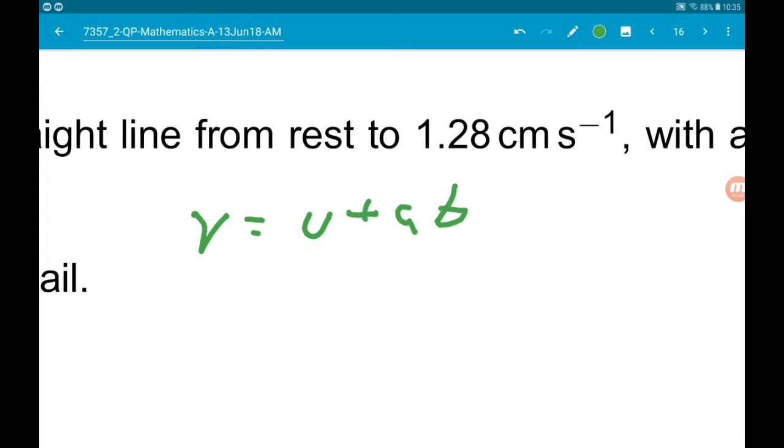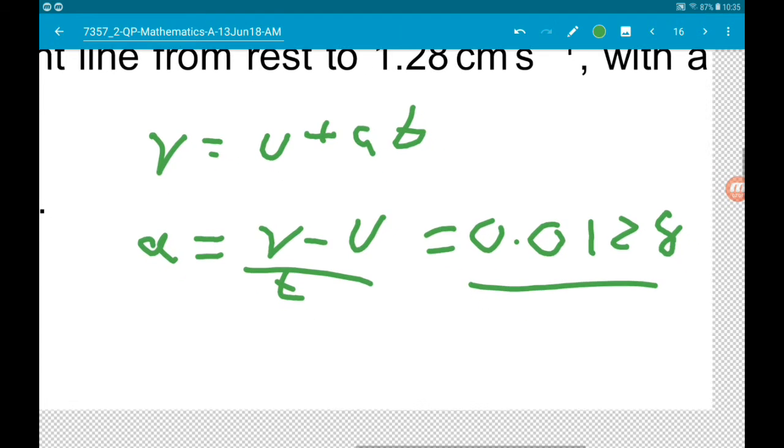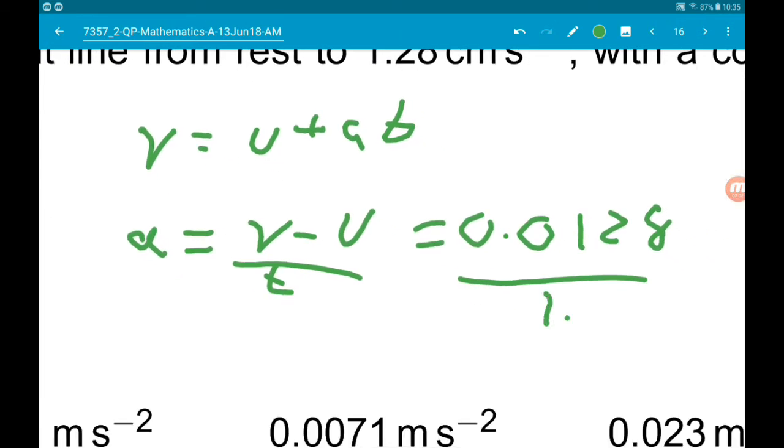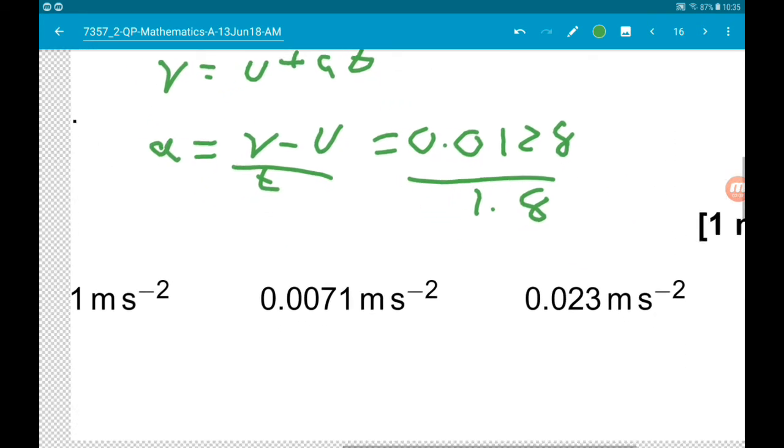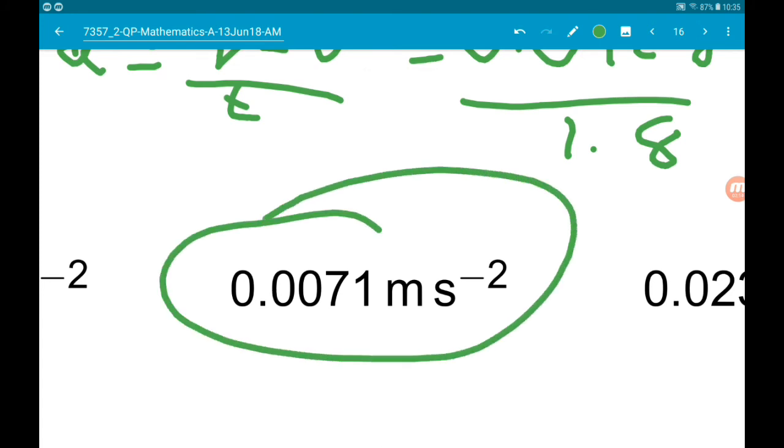So here that's gonna be 0.0128 over 1.8. Now that gives us 0.0071 meters per second squared.